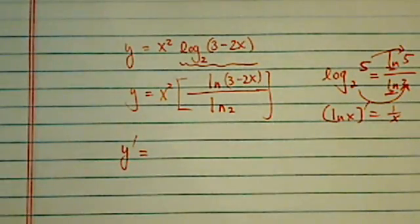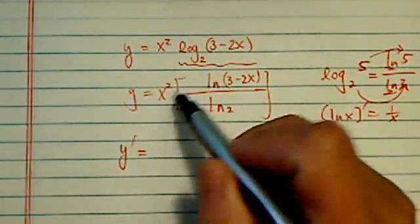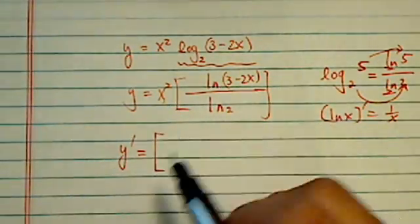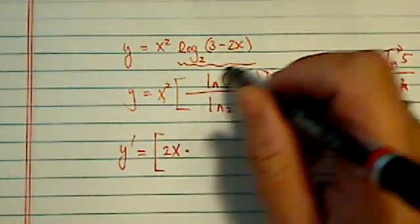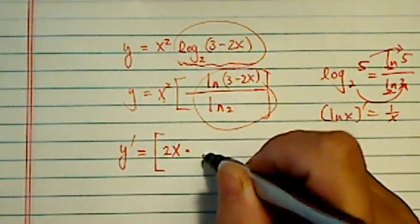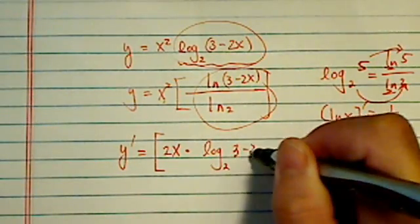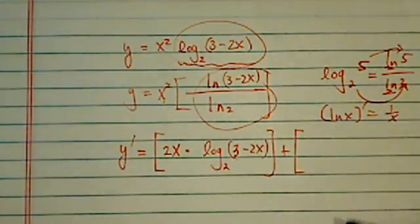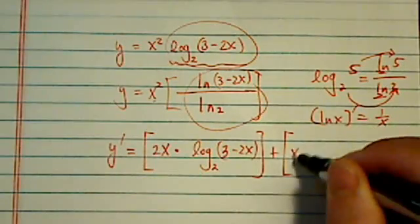From here, we're going to use derivative for the product. Derivative for the product is derivative of the first one, which is 2x, and you leave the second one alone. Since the second one is really equal to this, instead of writing this two forms that's dividing, I'm just going to leave the first one. I added it with, I'm going to leave the first one alone, which is x squared.